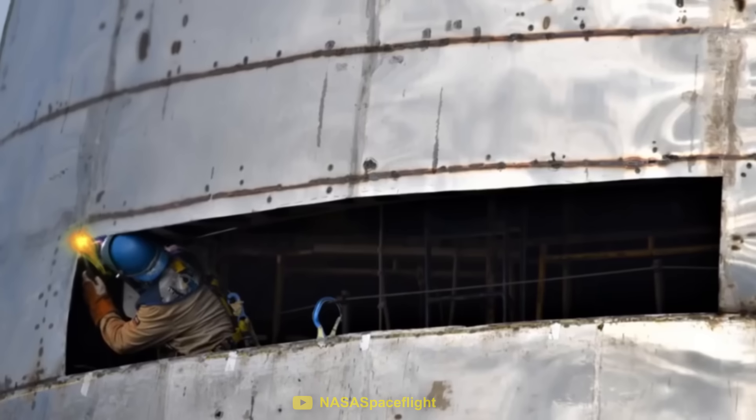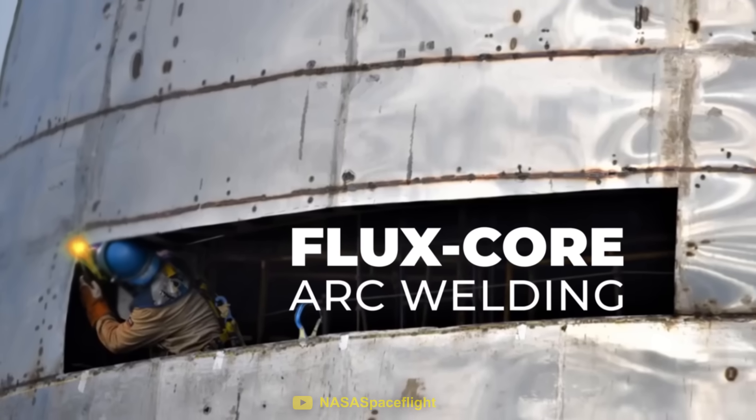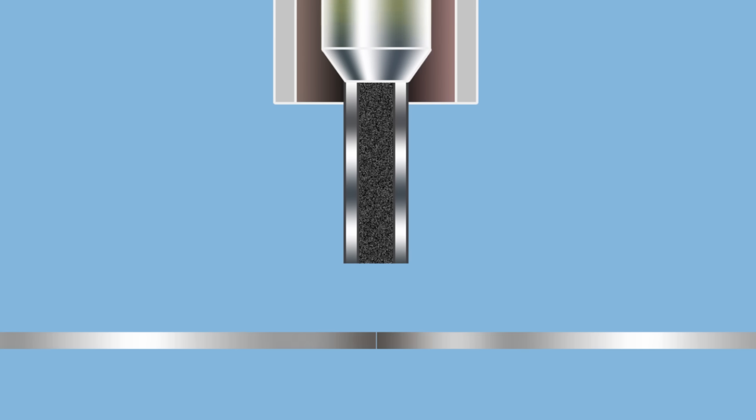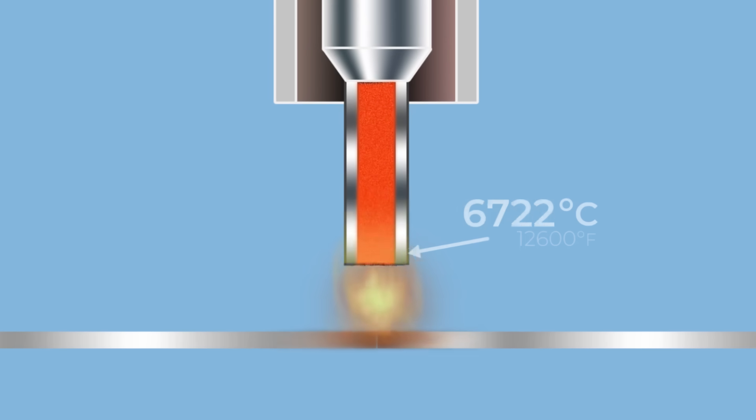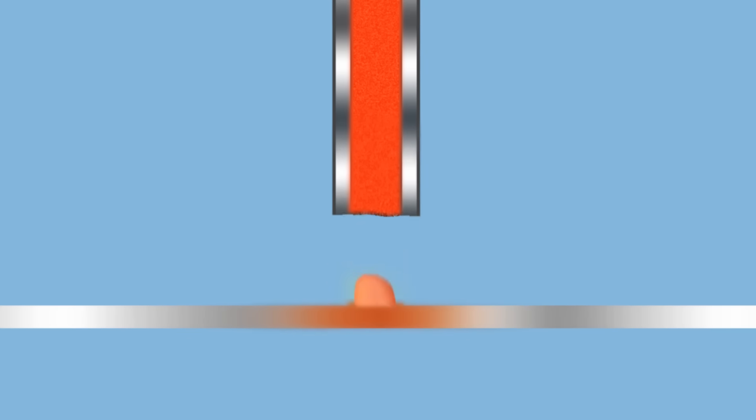The early Starship prototypes used a welding method called flux core. With this method, a voltage is passed through a metallic wire, which forms an arc between it and the metal, causing it to melt. The tip of the metallic wire also melts and falls into the now molten stainless steel, filling up any cracks or air bubbles.